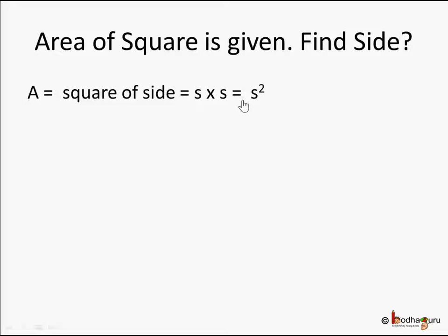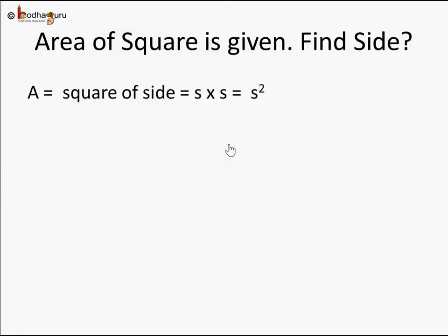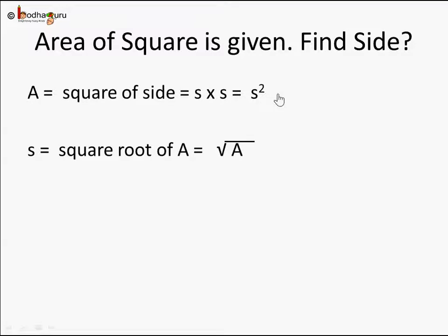But in this particular problem, given the side we can find its area using the square operation — that is side into side. But here we are given a problem where area is given and we need to find the side. That is the reverse operation. It's nothing but: side is equal to square root of A. We represent this new operation called square root with a small line, a slanting line, and a horizontal line. So square root of A is the side.